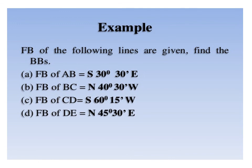For line CD with forward bearing S 60 degrees 15 minutes west, the back bearing equals N 60 degrees 15 minutes east. For line DE with forward bearing N 45 degrees 30 minutes east, the back bearing of DE equals S 45 degrees 30 minutes west.